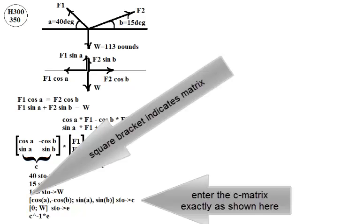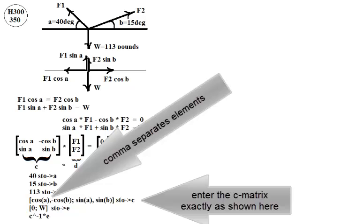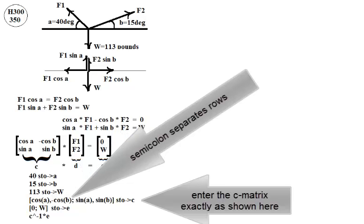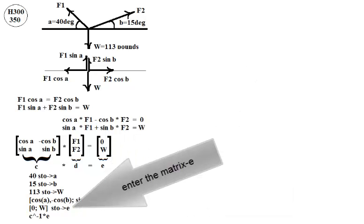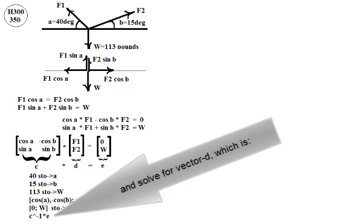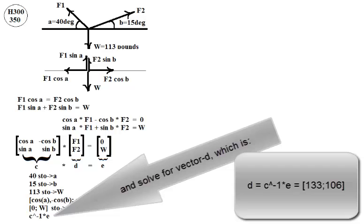Square bracket indicates matrix, comma separates elements, semicolon separates rows. Enter the E matrix. And solve for the D vector, which is C inverse multiplied by E. Force 1 is 133 pounds and force 2 is 106 pounds.